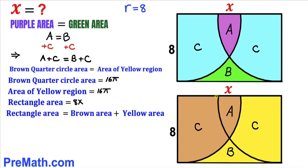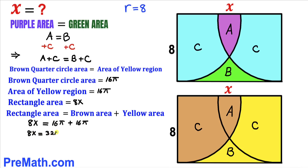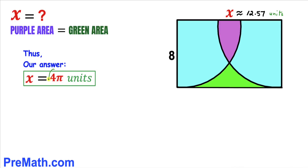Here's our final step. The area of the rectangle equals the area of the brown region plus the area of the yellow region. Filling in the values: 8x equals 16 pi plus 16 pi. Combining like terms gives us 8x equals 32 pi. Dividing both sides by 8, our x value turns out to be simply 4 pi.